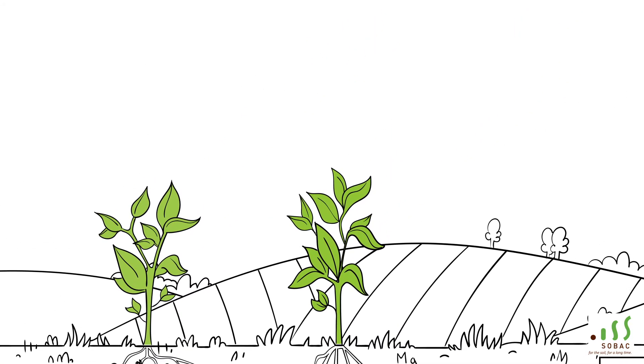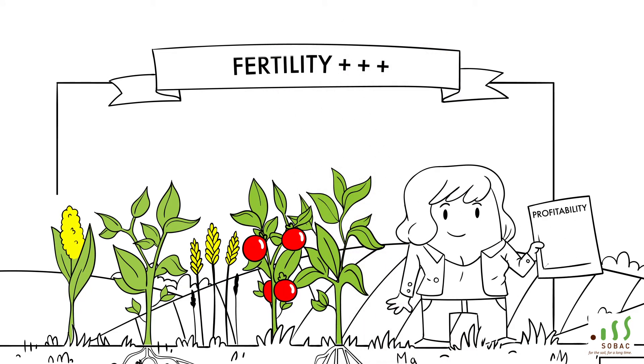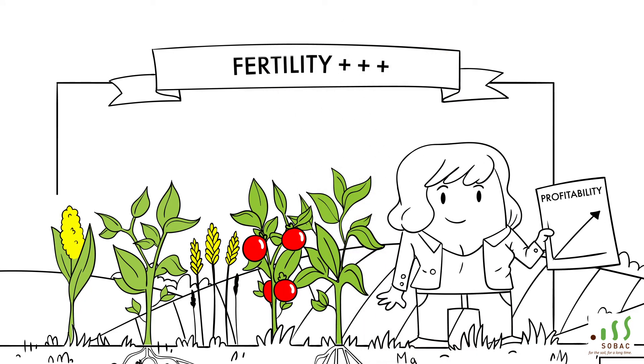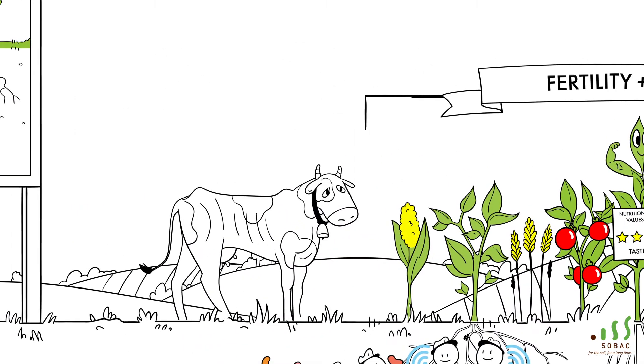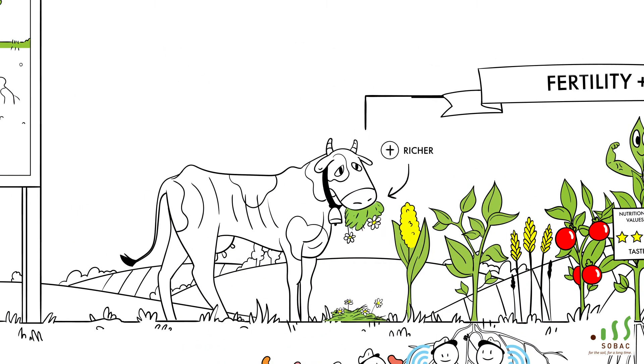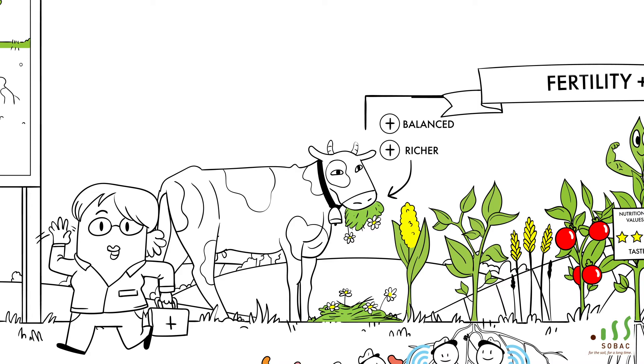This improvement of the soil activity boosts its fertility and therefore increases the overall profitability of the farm. Plants are stronger. They have better nutritional values. Thus, animals are offered self-produced, richer and more balanced forage and quality production, which reduces veterinary costs and improves the health of the animals.